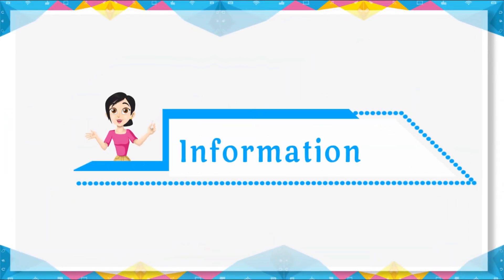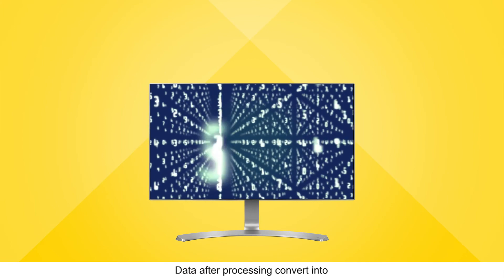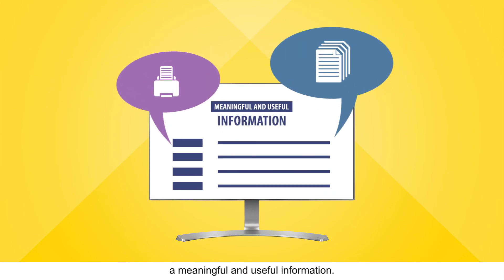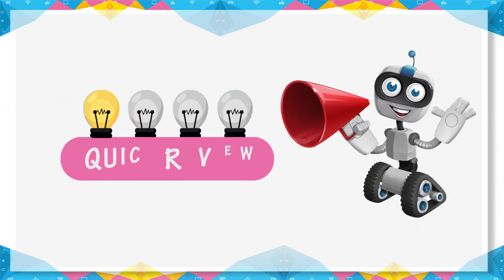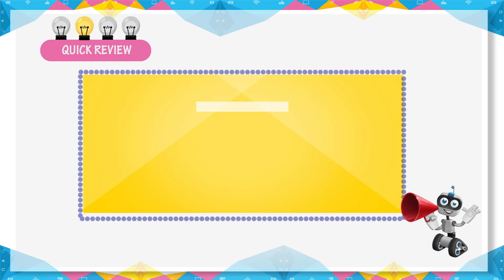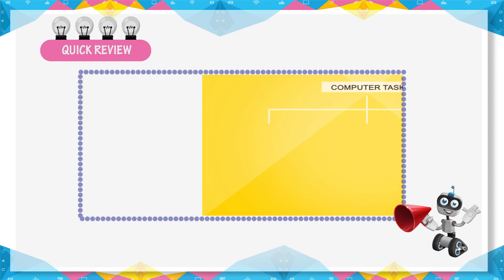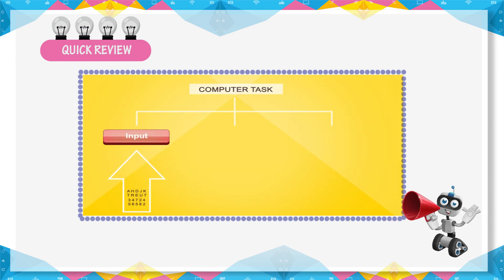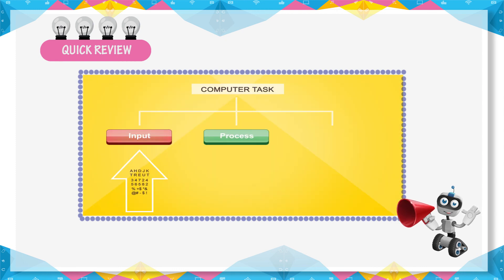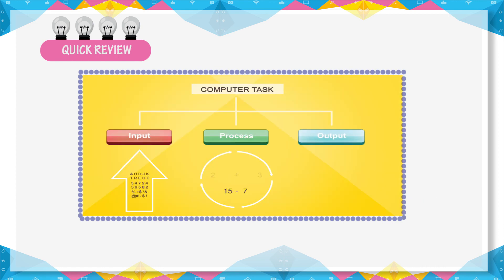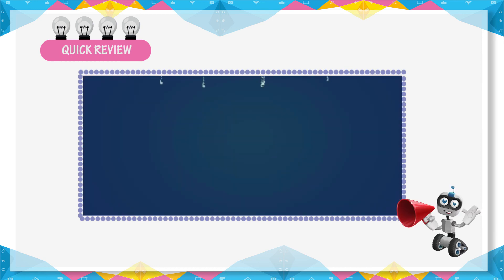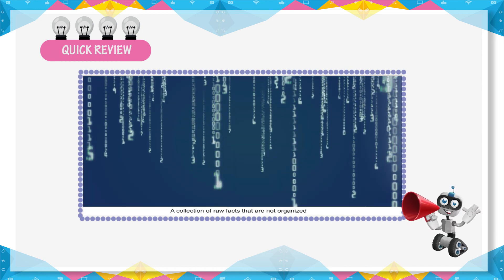Information: After processing, data is converted into meaningful and useful information. Quick Review — A computer task is divided into three stages: Input, Process, Output. Input accepts raw facts, figures, and symbols. Process is the action performed on data to turn it into information. Output is the result of processing. A collection of raw facts is called data; information is meaningful and useful.